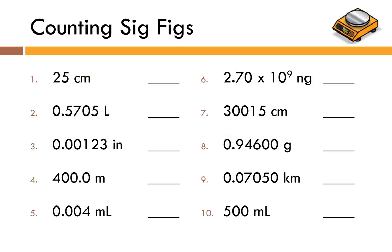Pause the video and determine the number of significant figures in each measurement. The first one has two sig figs — only zeros really cause a problem. In number two, the zero between the 7 and the 5 is significant, but the leading 1 is not, giving four sig figs. In measurement three, all the zeros are not significant, so there are three sig figs. The measurement 400.0 meters has all digits significant — four sig figs. The measurement 0.004 mL has only one sig fig — those leading zeros are not significant.